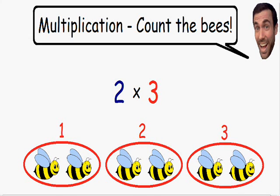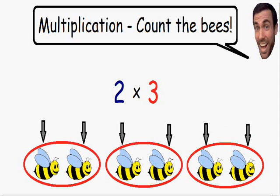So now how many b's do we have in total? Well we have one, two, three, four, five, six b's in total. So 2 times 3 is equal to 6.